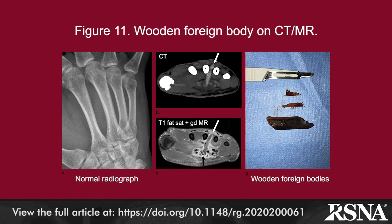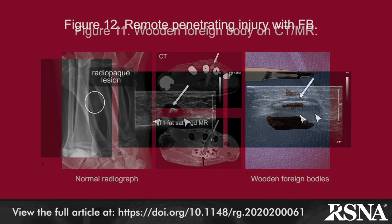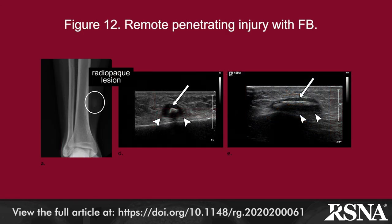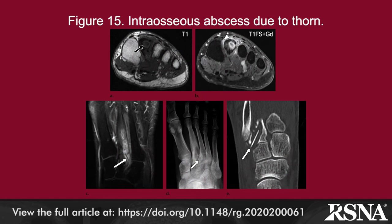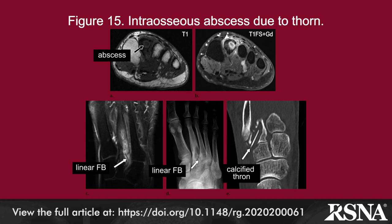Wood and organic materials, such as thorns, comprise a large percentage of foreign bodies that are missed on radiography. While ultrasound is typically most useful in these cases, CT and MRI can be helpful as problem-solving tools, particularly when the history of injury is remote or not even recalled. If located intra-articularly or near or inside bony structures, wooden or organic material foreign bodies may result in synovitis, septic arthritis, and/or osteomyelitis.